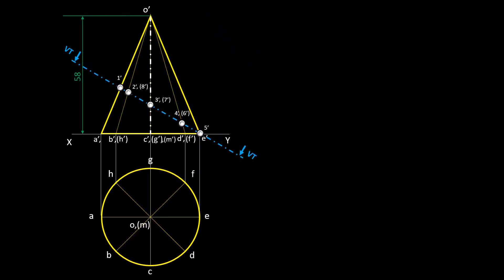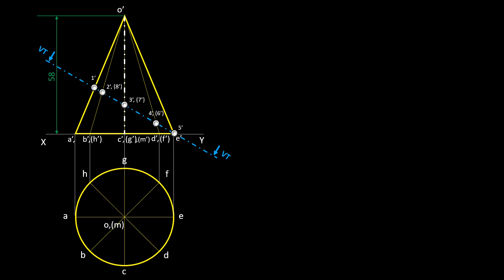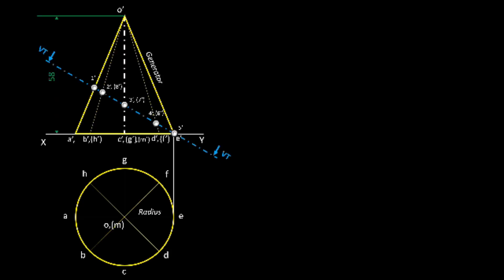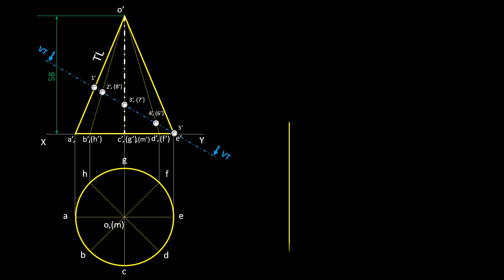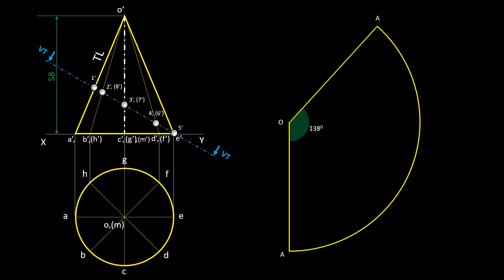All section points are located on the front view. For developing the cone, we have to find the subtended angle using the base radius and the length of the generator. The relation is: 360 multiplied by the ratio of the base circle radius to the length of the generator, which gives 138 degrees. Let's start developing the cone from generator OA. Draw the sector of a circle with radius equal to the true length of the generator and a subtended angle of 138 degrees. Since the base circle was divided into 8 equal portions, divide the pattern into 8 parts by bisecting the whole angle and then bisecting the individual angles to complete the pattern.